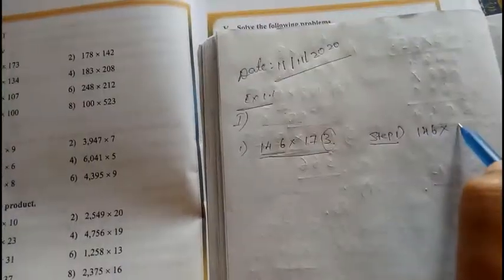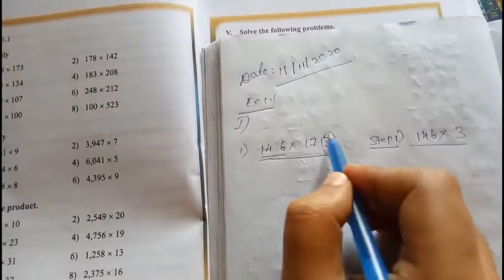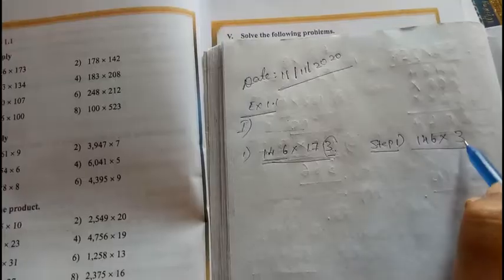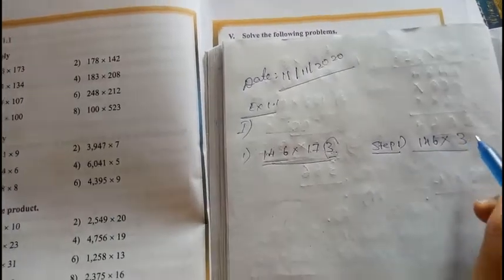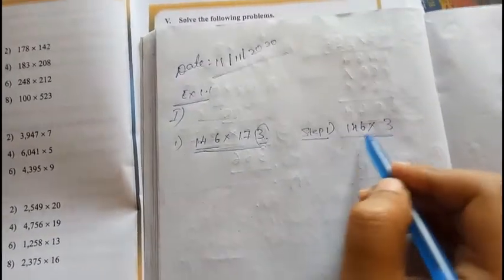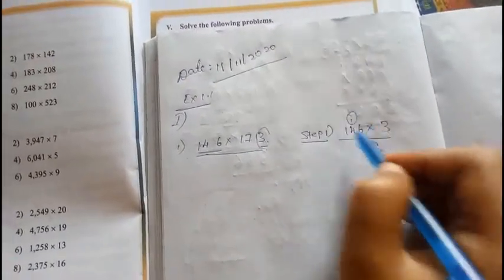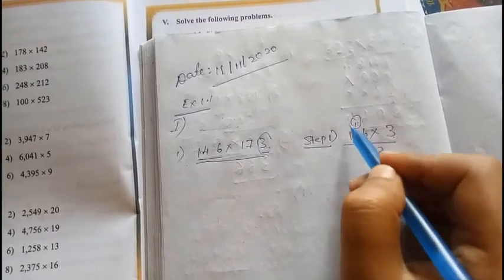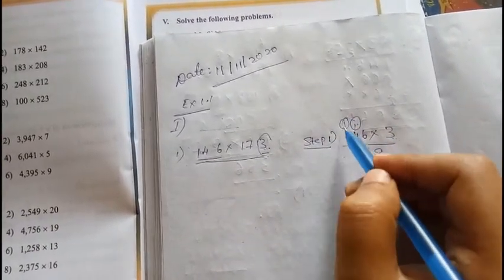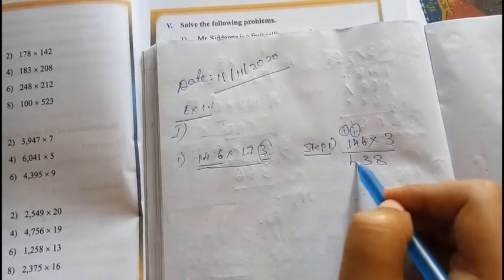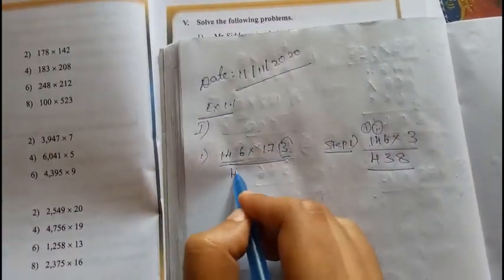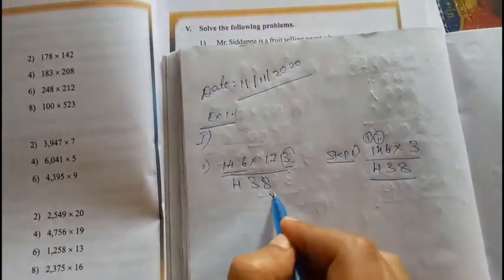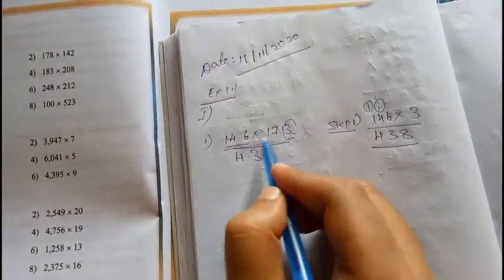From the right, first digit - same multiplication, single digit multiplication. So 3 times 6 is 18, 1 carry, 3 times 4, that's 12, plus 1 is 13, carry 1. 3 times 1 is 3, plus 1 is 4. You need to write here 438, then put an into mark.